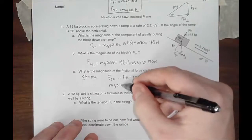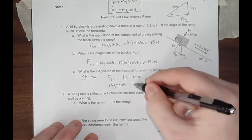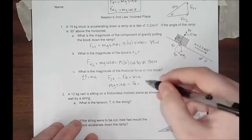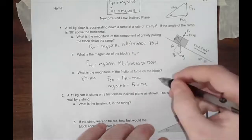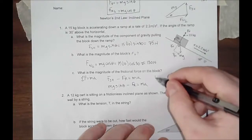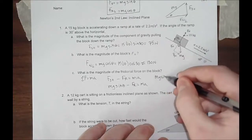MG sine of theta minus frictional force equals MA. The frictional force is equal to mg sine of theta minus MA.